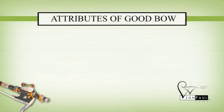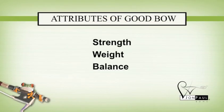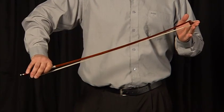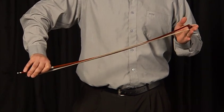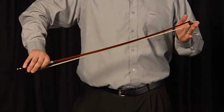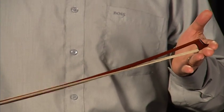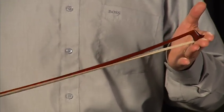The three attributes that make a good bow are strength, weight, and balance. When we talk about the strength of a bow, we are referring to the stiffness or resistance of the stick as it is flexed. There is a minimum of strength required to hold the hair and make a sound as it is pulled across the string.